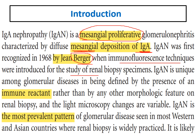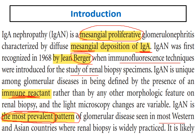IgA is unique among glomerular diseases as it is defined by the presence of immune reactant — specifically IgA deposition in the mesangium. IgA nephropathy carries its importance from being the most prevalent pattern of glomerular disease and the most common glomerulonephritis worldwide, whether in Western countries or in Asian countries.